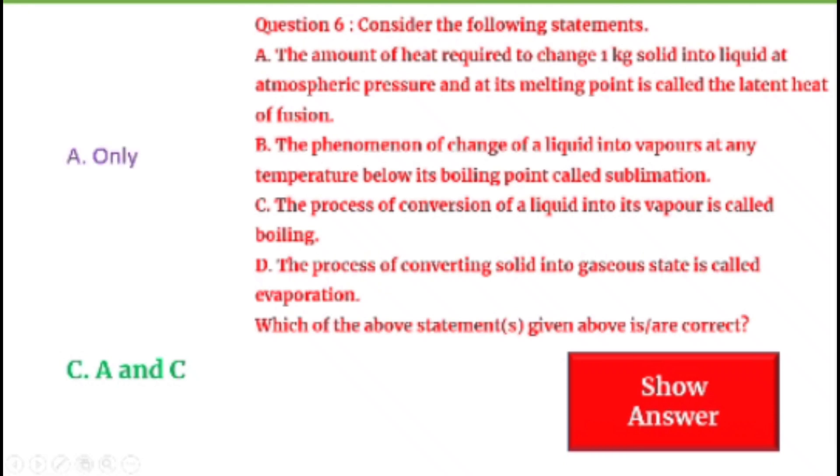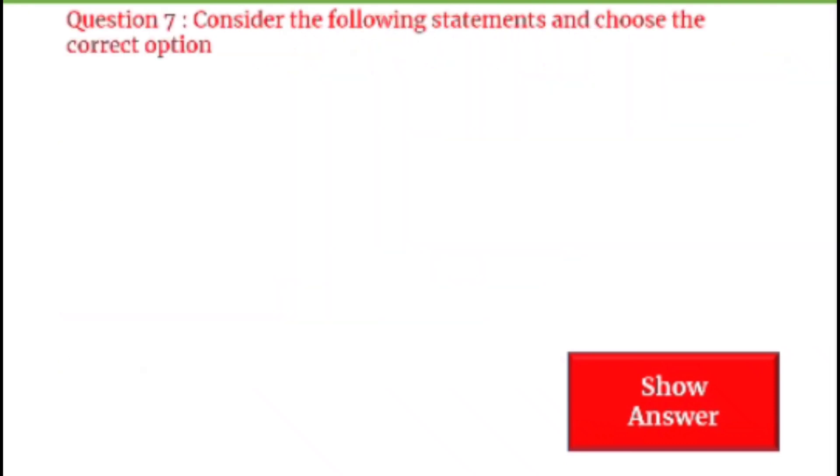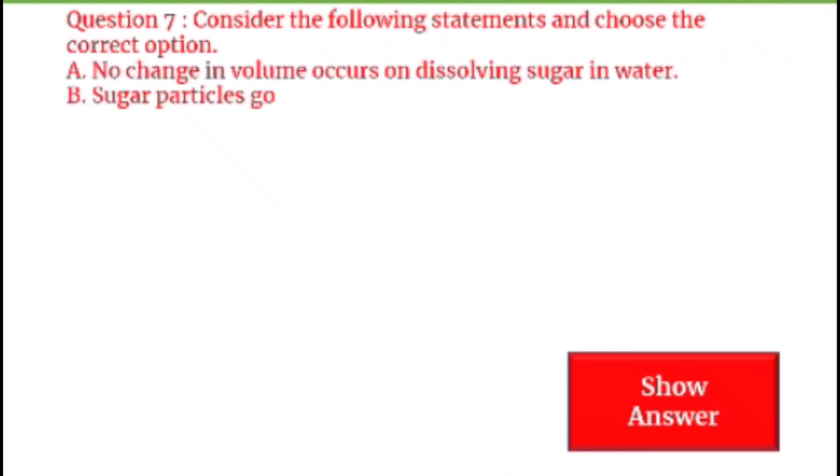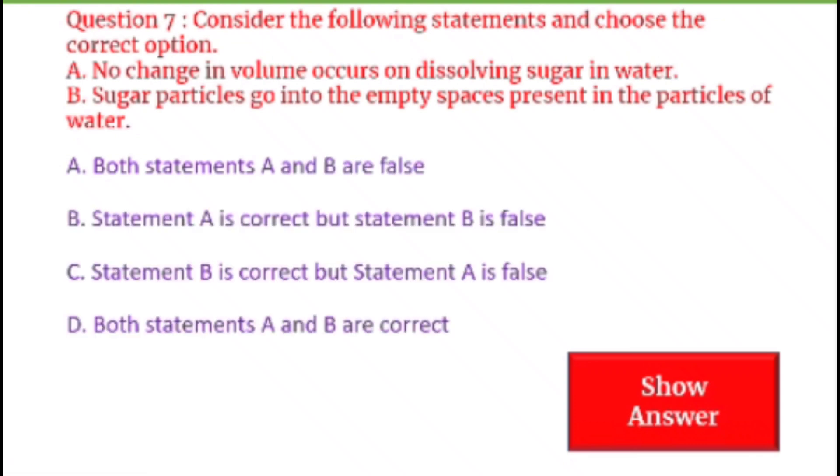Next question on your screen. First of all you see the option. We have four options: A, B, C, D. Next question on your screen, question number 7. Consider the following statements and choose the correct option. A: No change in volume occurs on dissolving sugar in water. B: Sugar particles go into the empty spaces present in the particles of water. Now the options we have: A: Both statements A and B are false. B: Statement A is correct but statement B is false. C: Statement B is correct but statement A is false. D: Both statements are correct. Let's see what will be the answer. D is the appropriate answer of this question. Both statements A and B are correct.